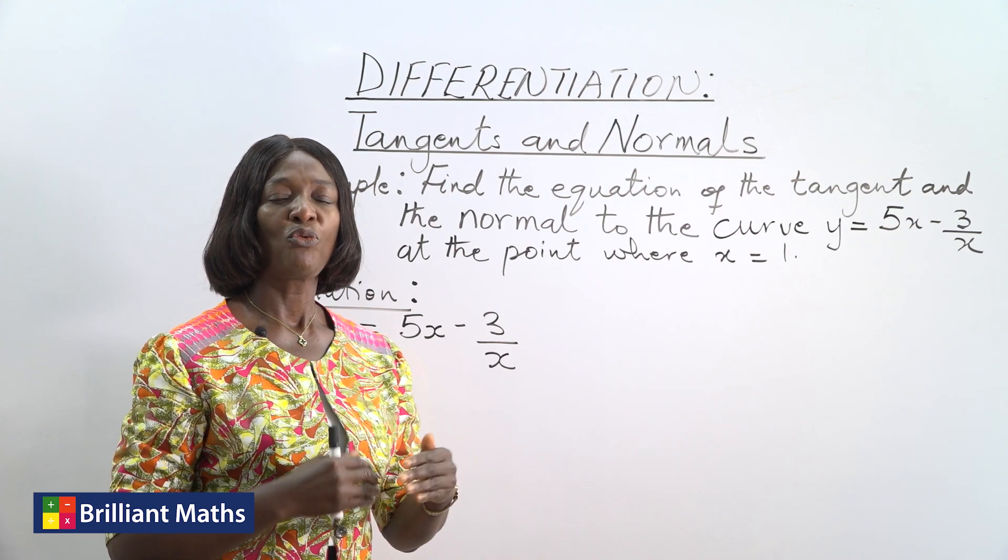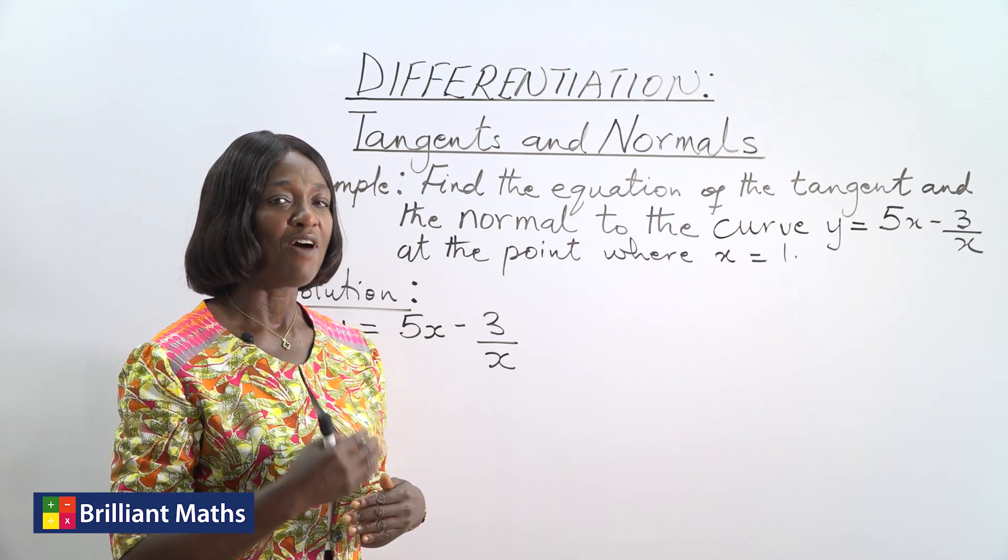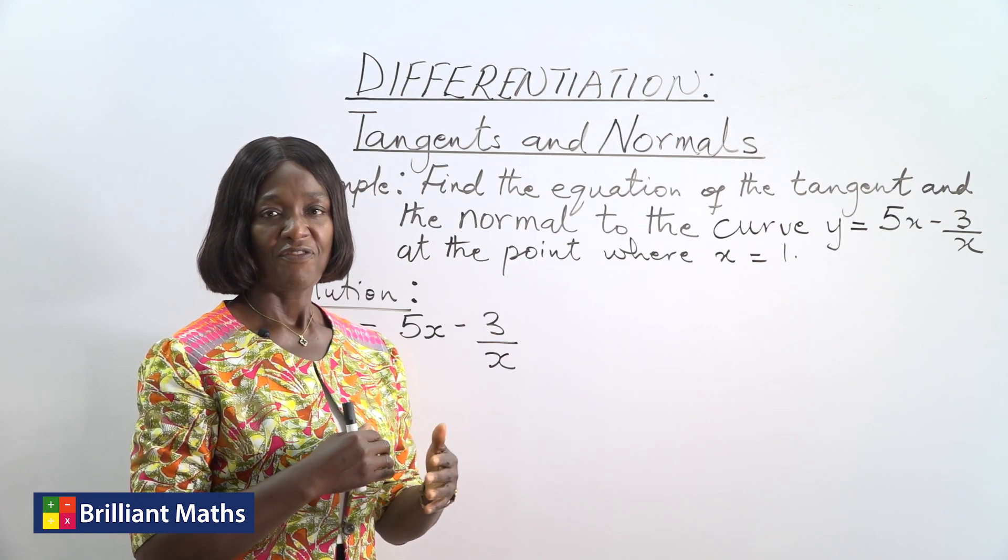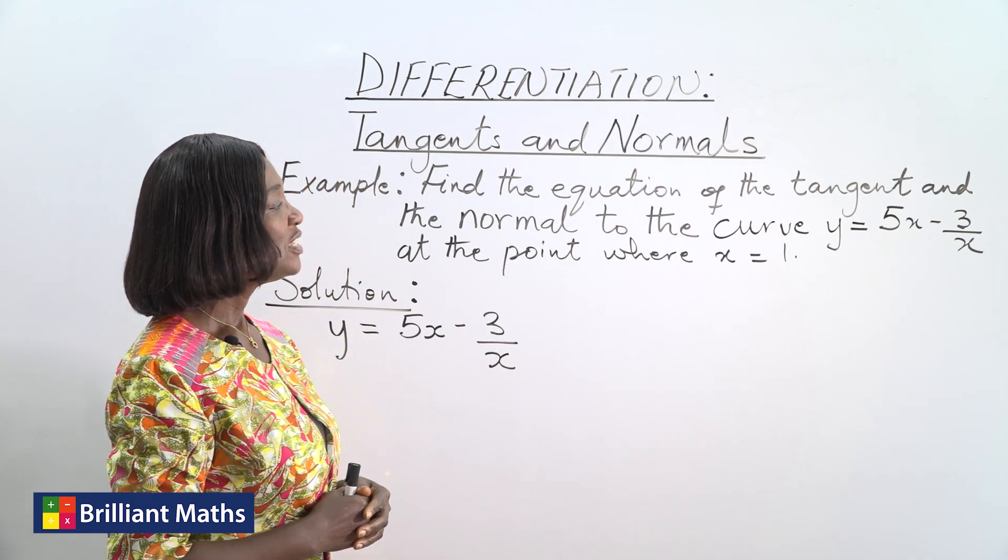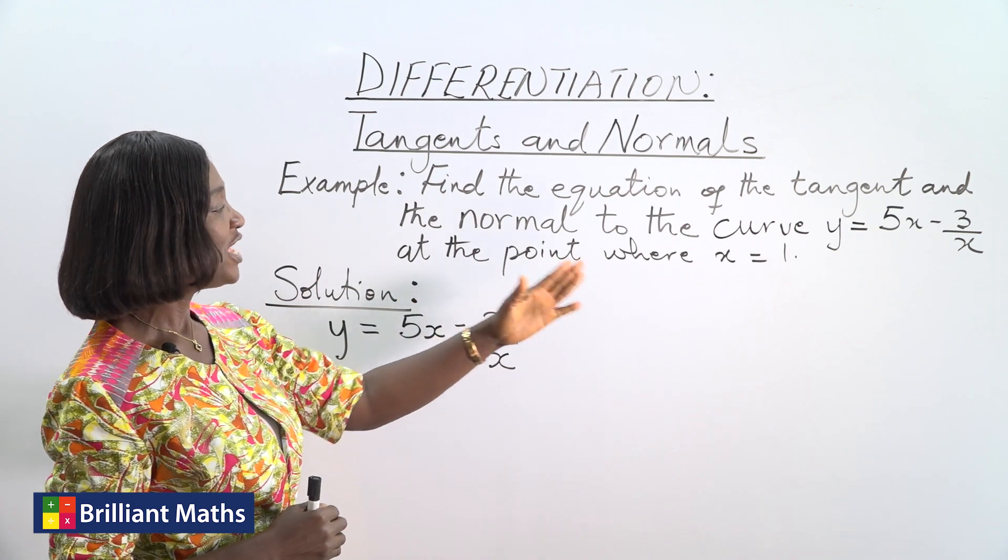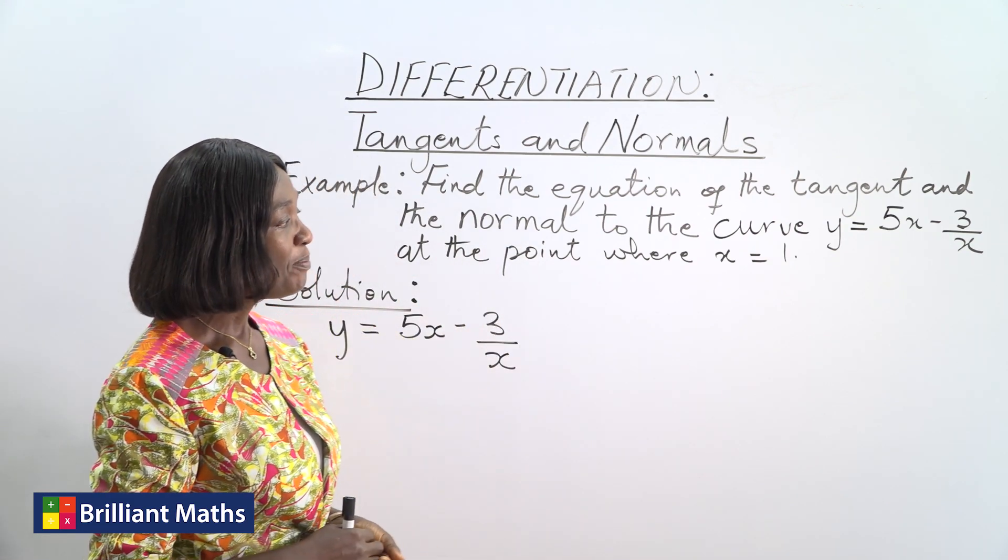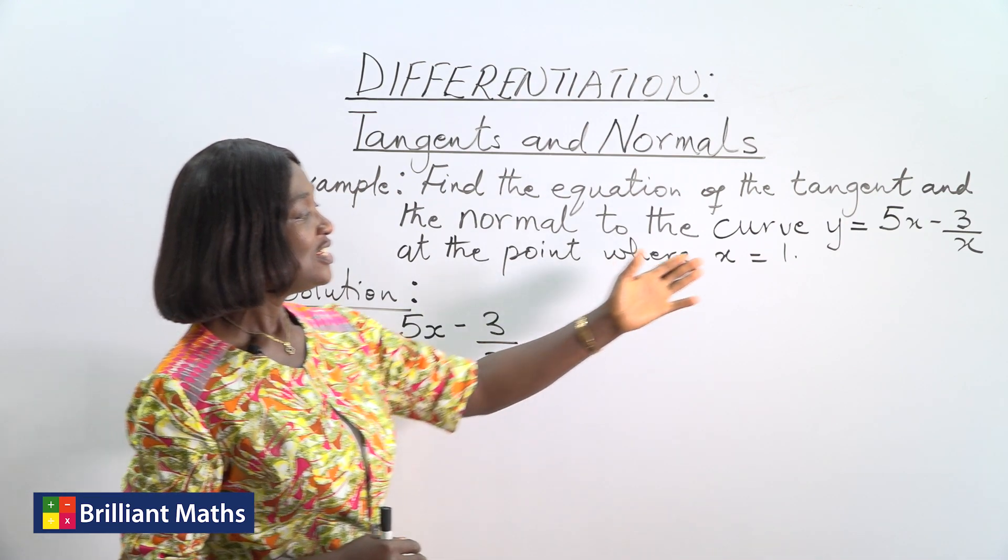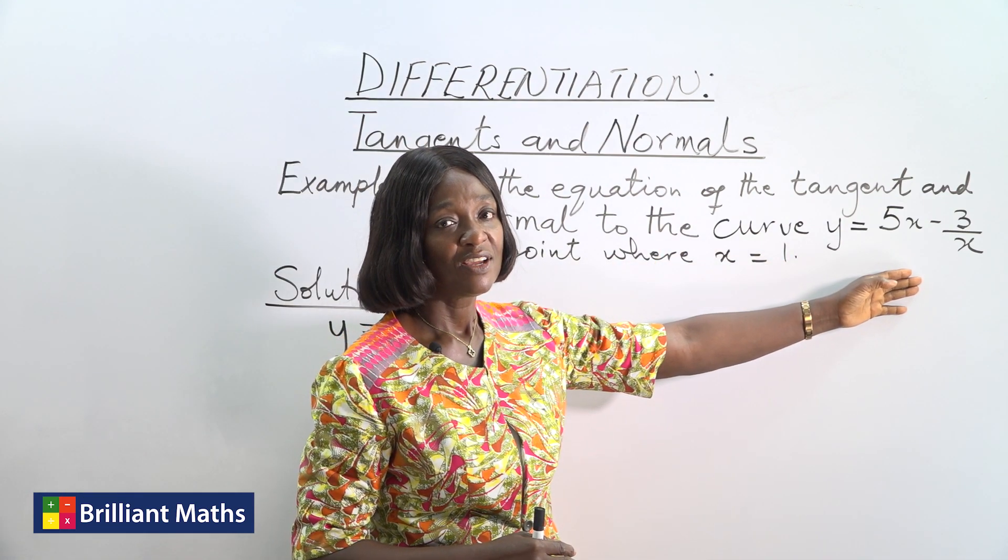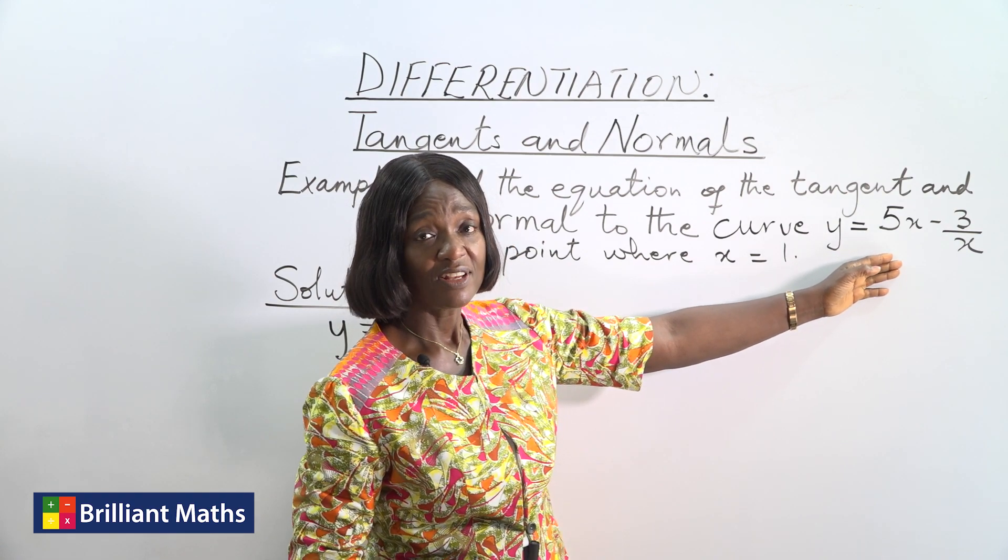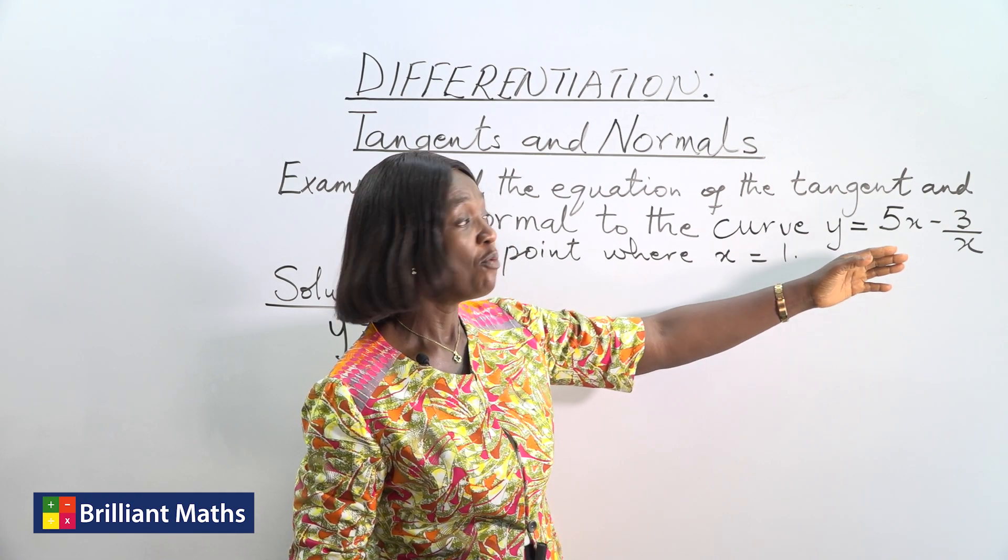I want us to go through the steps on how to find the equation of the tangent and the normal. The first step is: do you have the coordinates of the point? The second step: find the dy/dx for the curve you are given, because that will be your gradient.